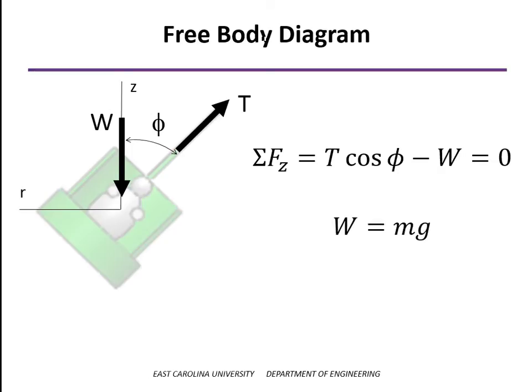And so we can solve this by substituting in for the weight, the mass times g. We can solve this for the tension T as mg divided by the cosine of the angle phi.